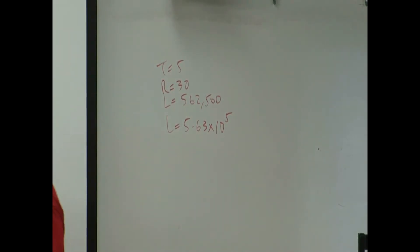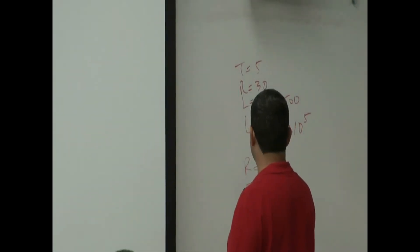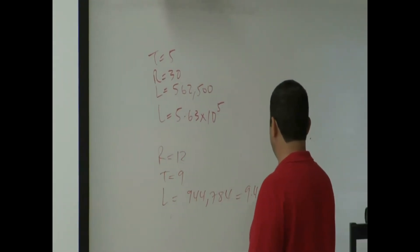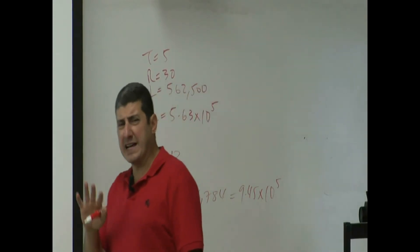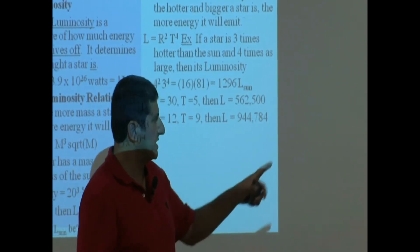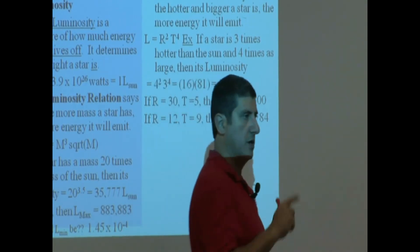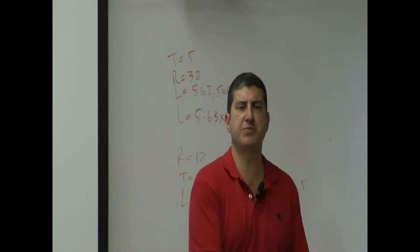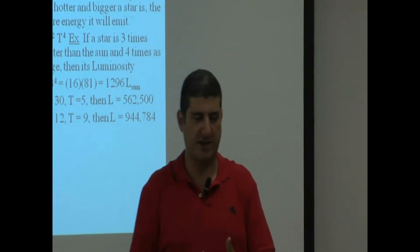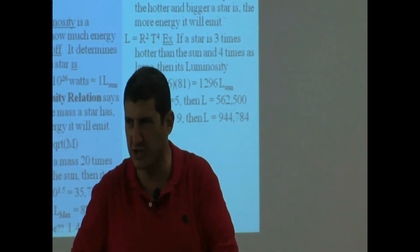Now I'm going to show you one that maybe it's impossible to have. If the radius is 12 times bigger than the sun and the temperature is 9 times hotter, you get 944,784 — which is about 9.45 times 10 to the 5. Well, it's likely, maybe — maybe not — that such a star actually exists, because it seems to be a little bit above what we said was the maximum. You can't simply devise a star as big as you want and as hot as you want; there's some limit to that.